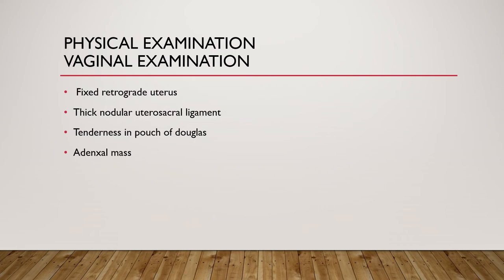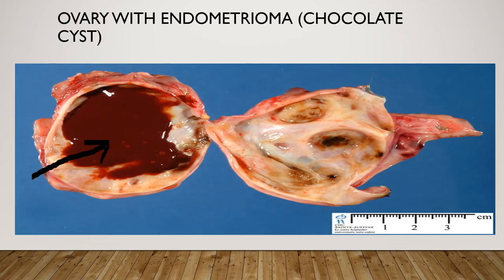Physical examination in endometriosis is mainly done by vaginal examination. General and abdominal examination are not very helpful. On vaginal examination, the main findings are a fixed retroverted uterus with nodularity felt alongside the uterosacral ligament and tenderness in the pouch of Douglas. We can also feel an adnexal mass, which represents an endometrioma or chocolate cyst.